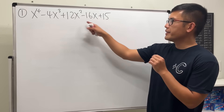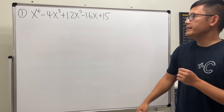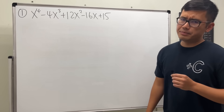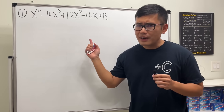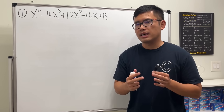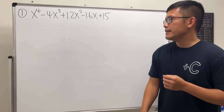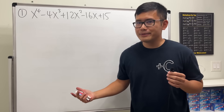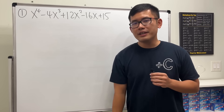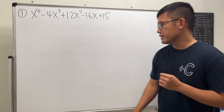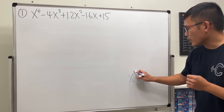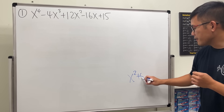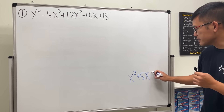For the first one we have a quadratic expression in the expanded form and ideally we would like to factor this as a product of two quadratics. The main question is how do we do that. Let's look at an easier case first: how do we factor a quadratic like x squared plus 5x plus 6.